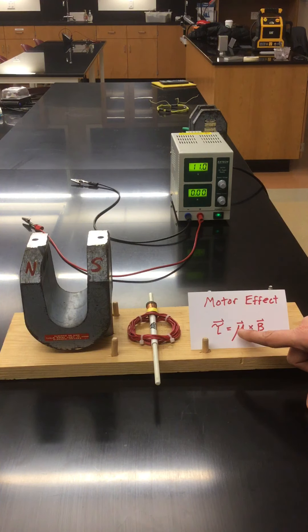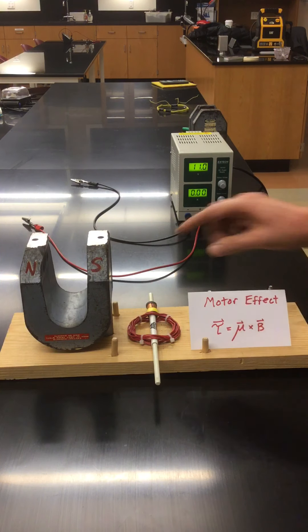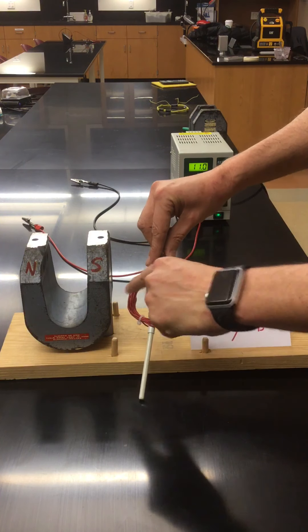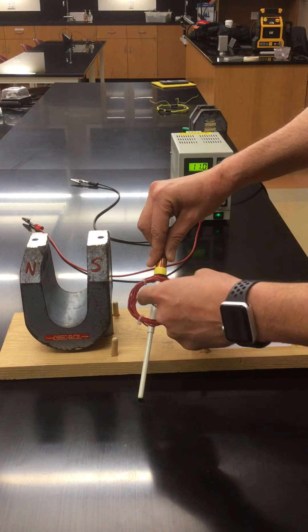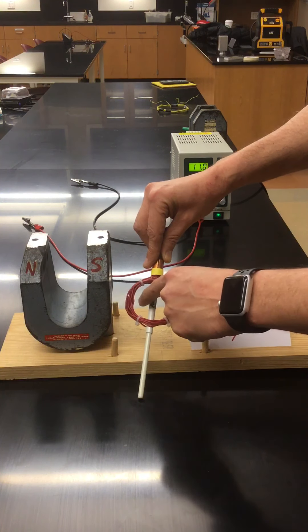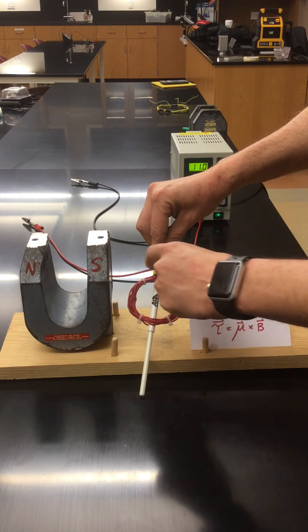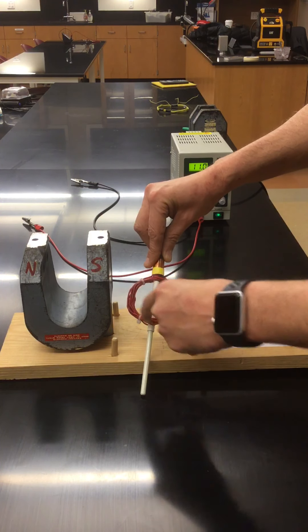This time mu represents something known as the magnetic dipole moment and it's really nothing more than the product of how much area this loop has. So this would be the area of the circle pi r squared. It's the product of that area with the amount of current in amps flowing through the wire.